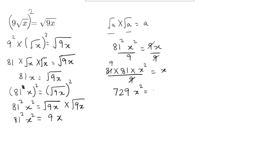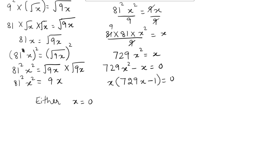Now we need to bring like terms together: 729x squared minus x equals 0. Since x is common in both terms, we can factor out x and write x times (729x minus 1) equals 0. This means there will be 2 solutions: either x equals 0, or 729x minus 1 equals 0. Solving the second: 729x equals 1, dividing both sides by 729, x equals 1 over 729.